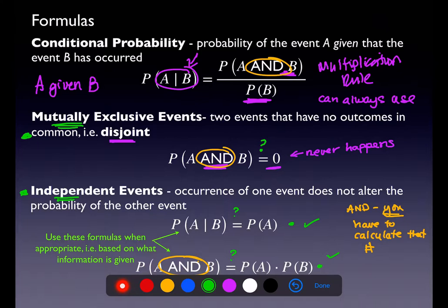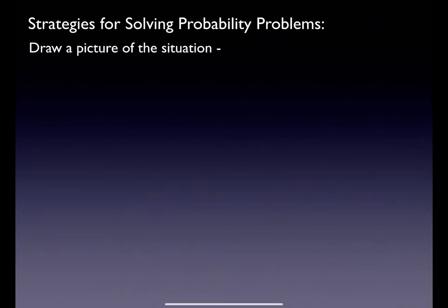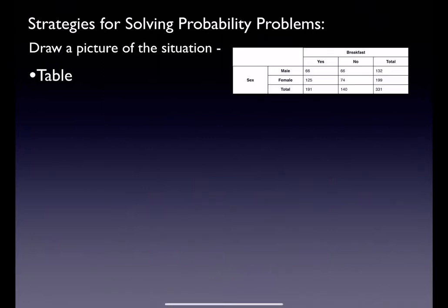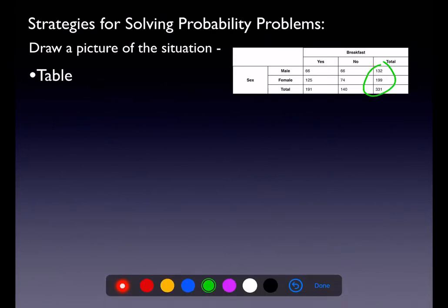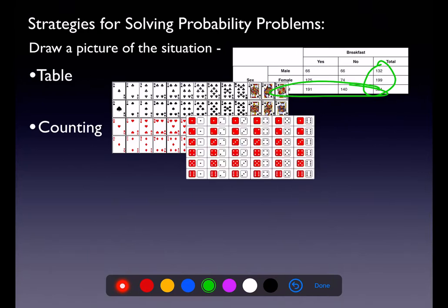So there are five main formulas you're using in this chapter. In terms of strategies: draw a picture. Maybe there's a table given — if the totals aren't given to you, go calculate them. There are counting problems — make sure you know what a deck of cards breaks down to and how to roll dice. There's a whole video on Canvas for that.